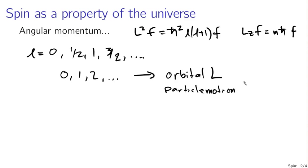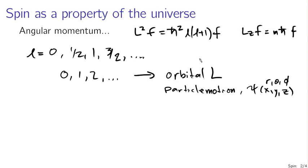We can write a wave function psi of, say, x, y, and z — or perhaps more accurately r, theta, and phi — that has this property of orbital angular momentum. The wave functions with specific values of L squared and L sub Z, the eigenfunctions of the L squared and L sub Z operators, are the spherical harmonics. We're also allowed to have spin angular momentum with integer values.